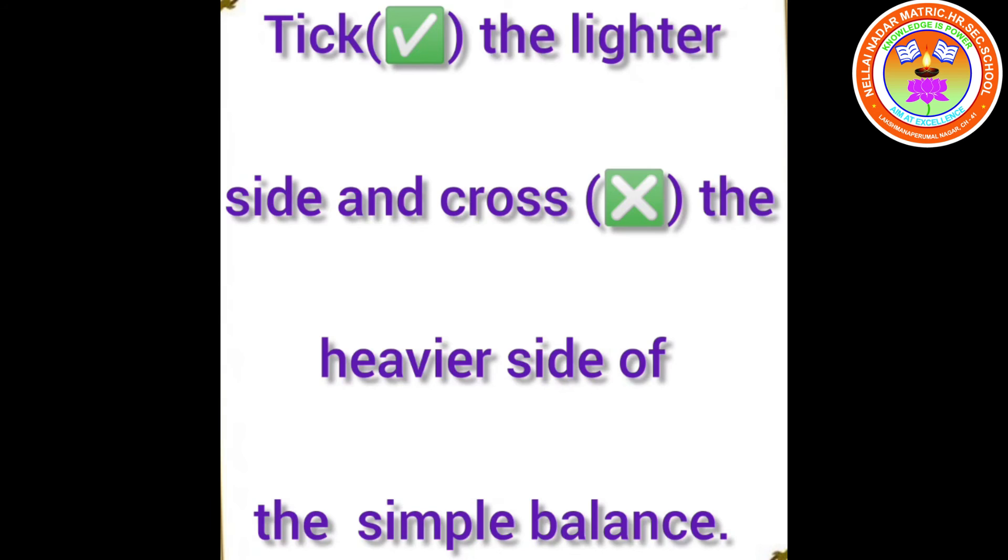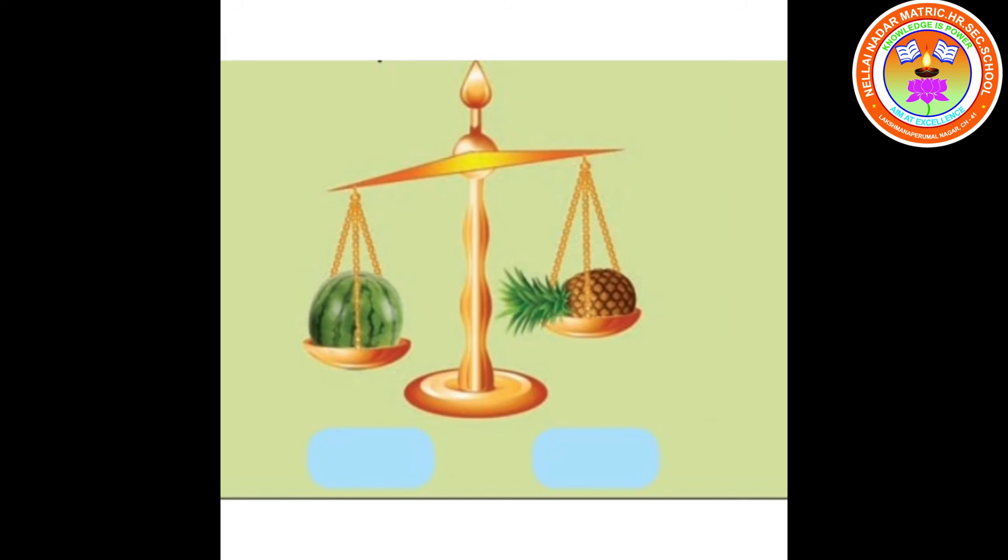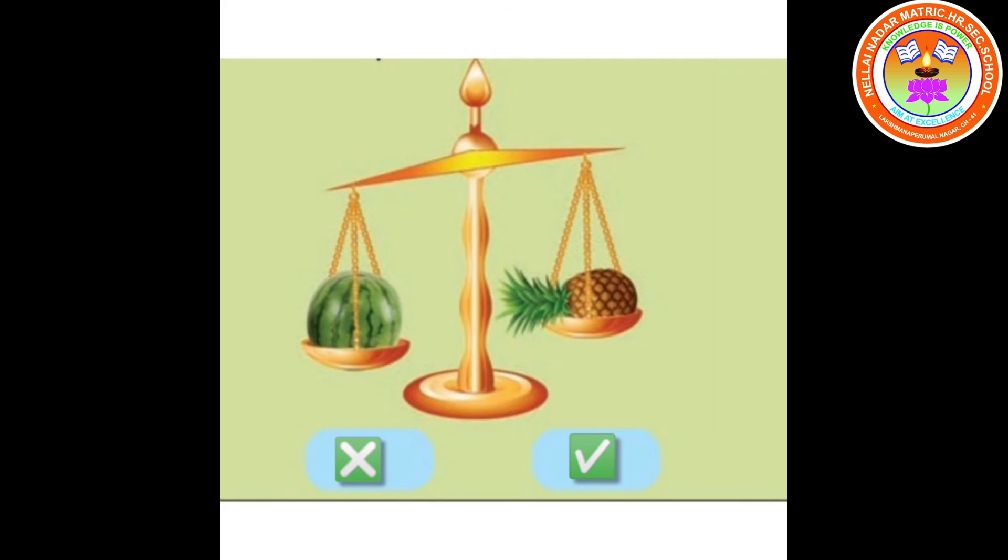Tick the lighter side. Tick the lighter side and cross the heavier side of the simple balance. Watermelon, pineapple. Which fruit is lightweight? Pineapple. So, tick the pineapple. Watermelon is heavy weight. So, cross the watermelon.